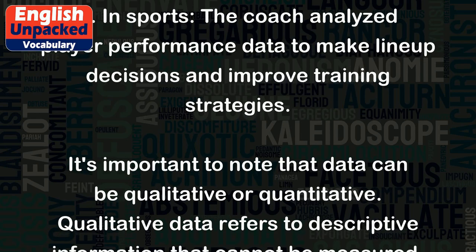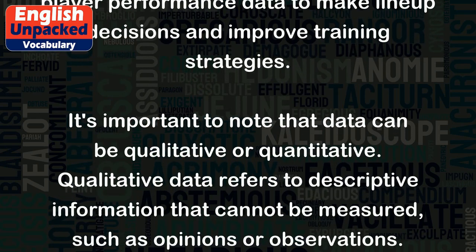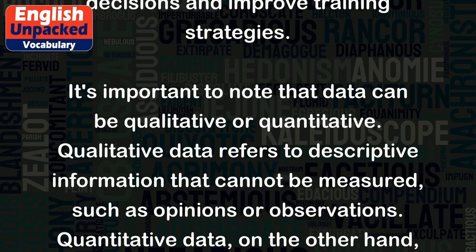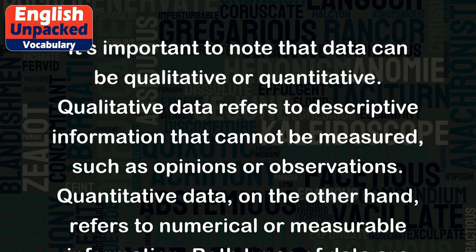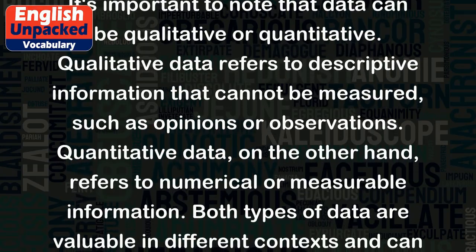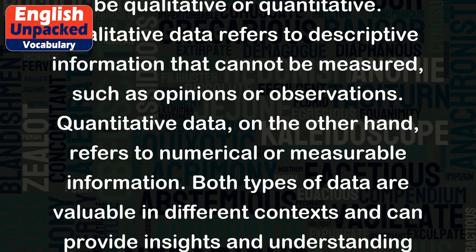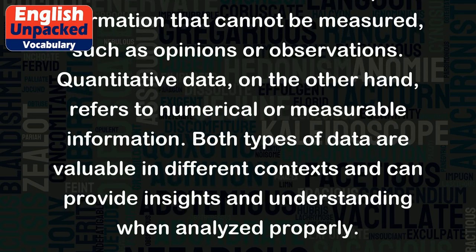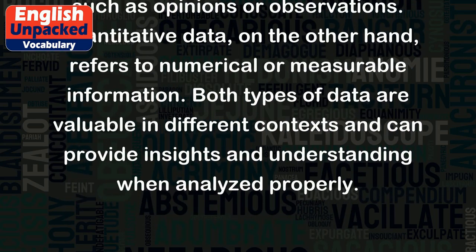It's important to note that data can be qualitative or quantitative. Qualitative data refers to descriptive information that cannot be measured, such as opinions or observations. Quantitative data, on the other hand, refers to numerical or measurable information.